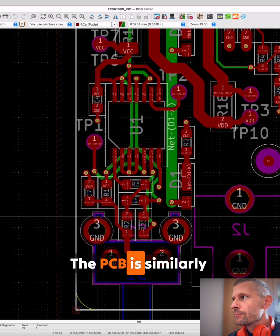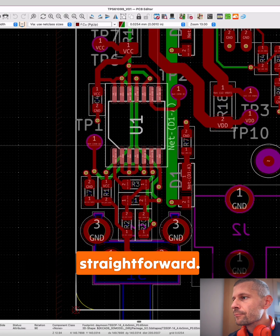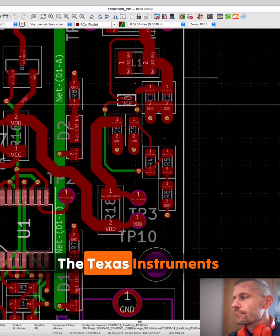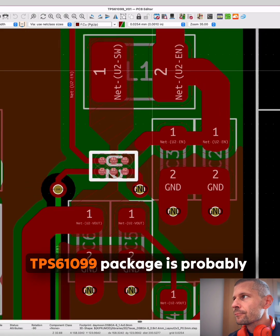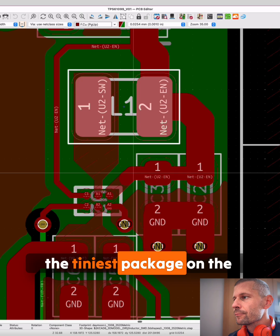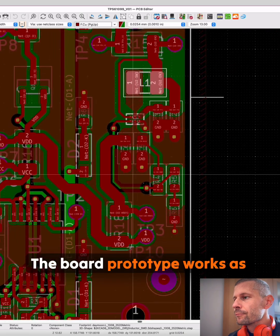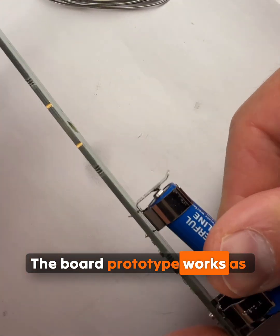The PCB is similarly straightforward. The Texas Instruments TPS61099 package is probably the tiniest package on the board. The board prototype works as expected.